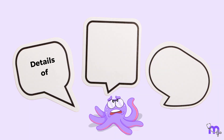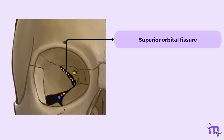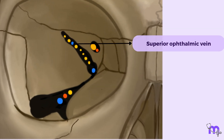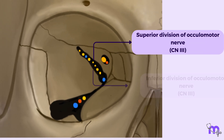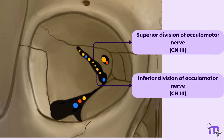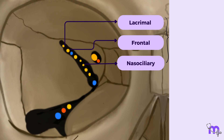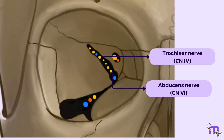Let's discuss the details of the two important fissures in the orbit: the superior and inferior orbital fissures. The superior orbital fissure is on the lateral wall of the orbit and provides passage to the superior ophthalmic vein, a branch of the inferior ophthalmic vein, superior and inferior branches of the third cranial nerve (oculomotor nerve), the lacrimal, frontal, and nasociliary branches of the ophthalmic division of the fifth cranial nerve (trigeminal nerve), the fourth cranial nerve (trochlear nerve), and the sixth cranial nerve (abducens nerve).